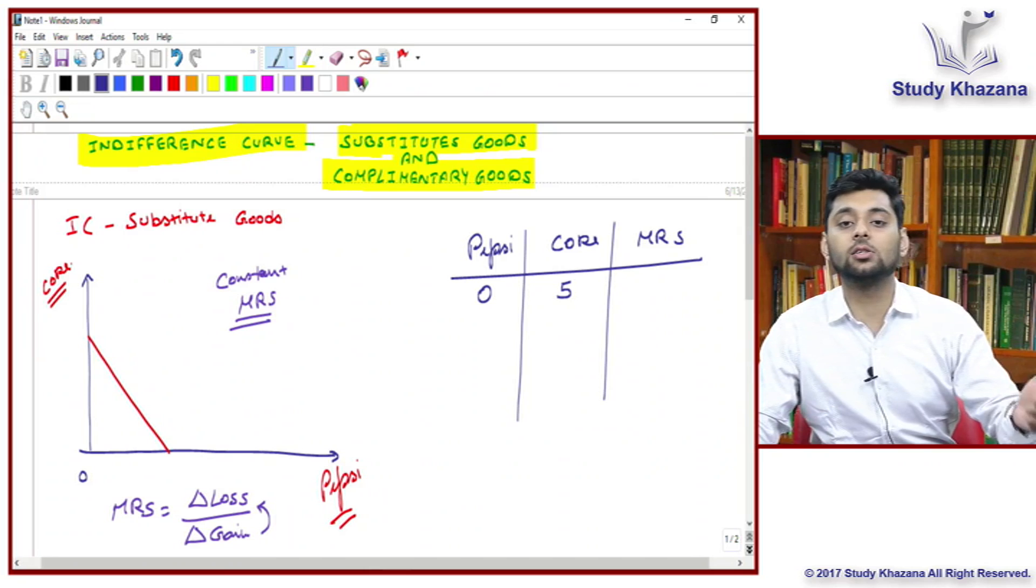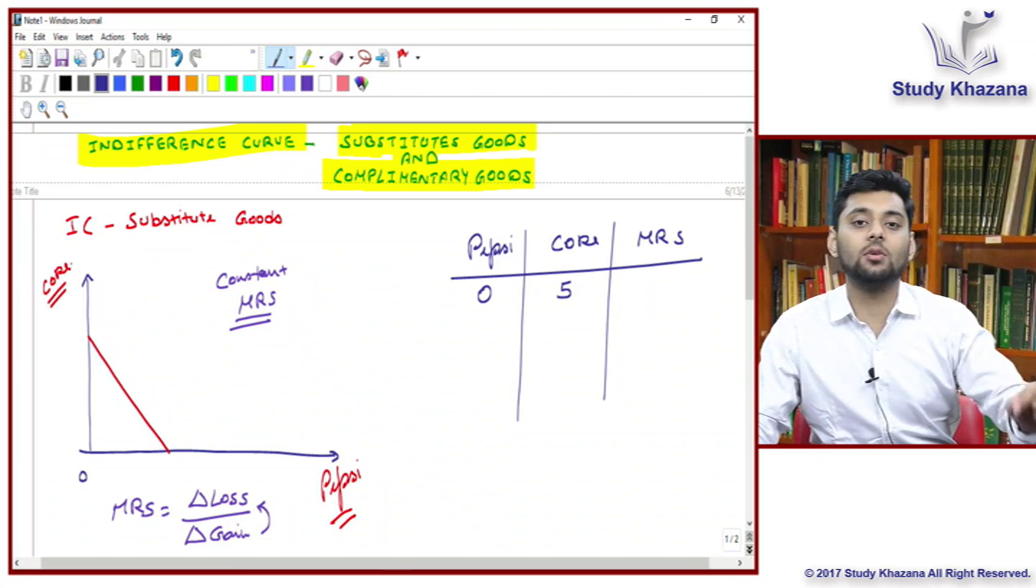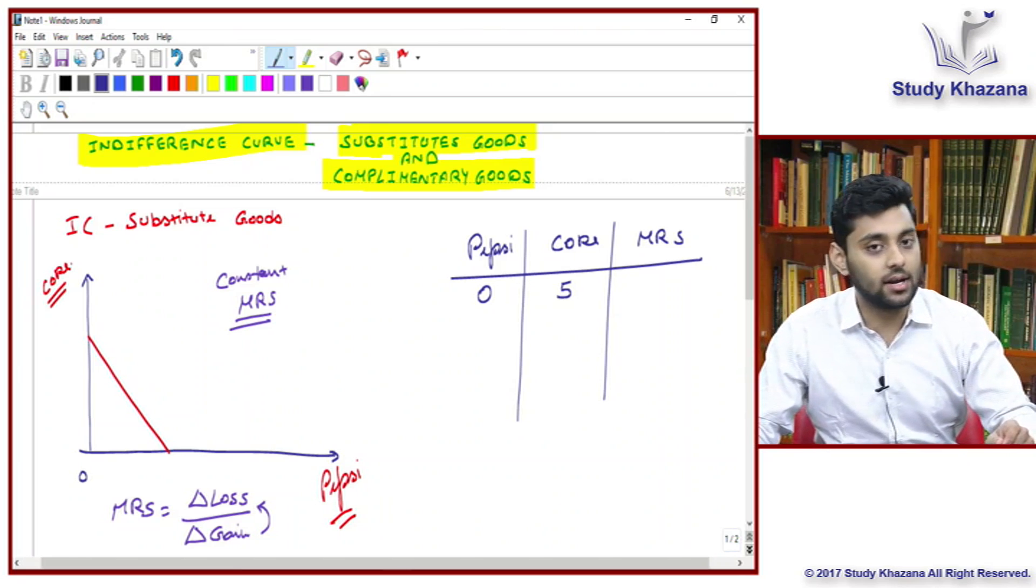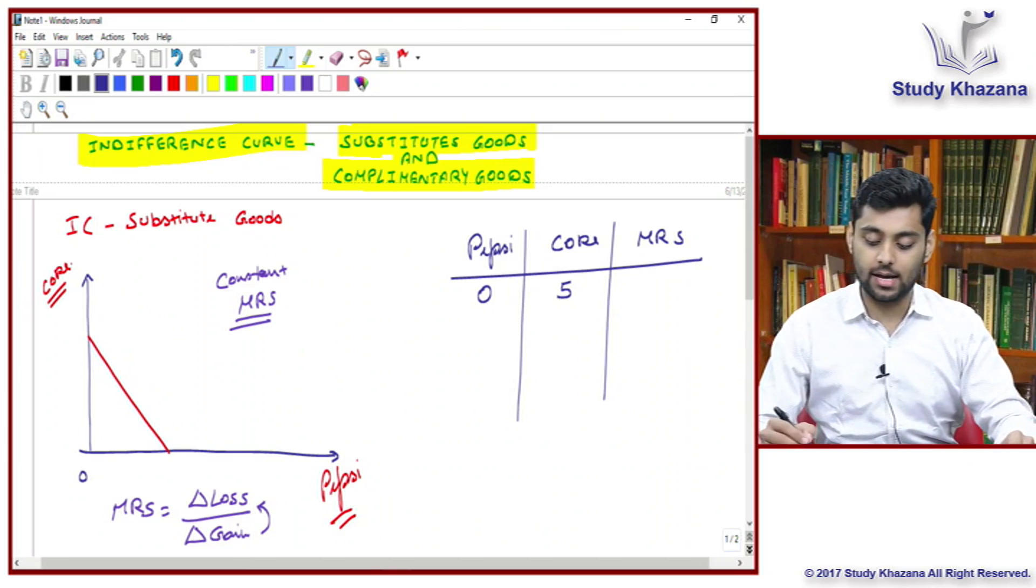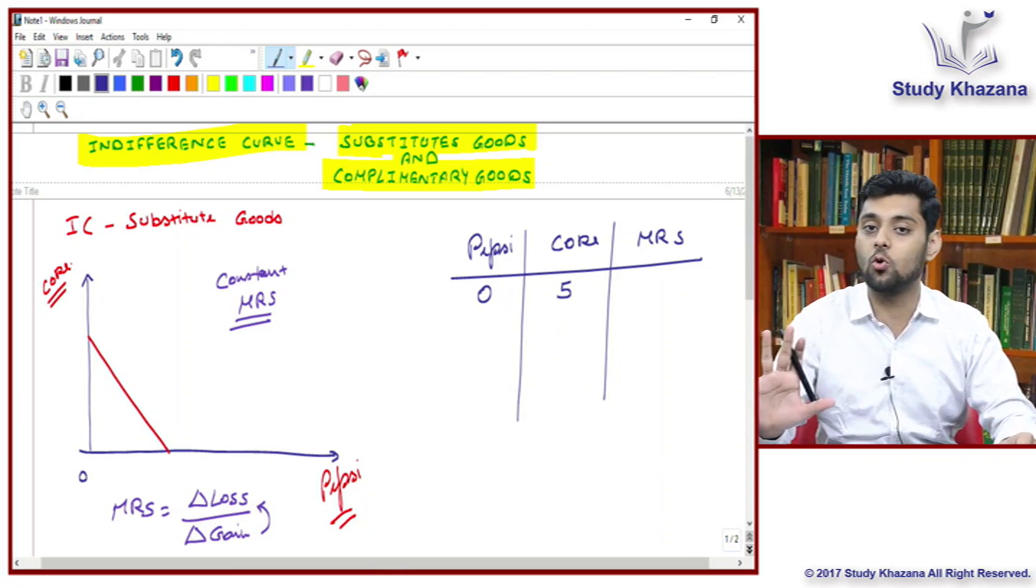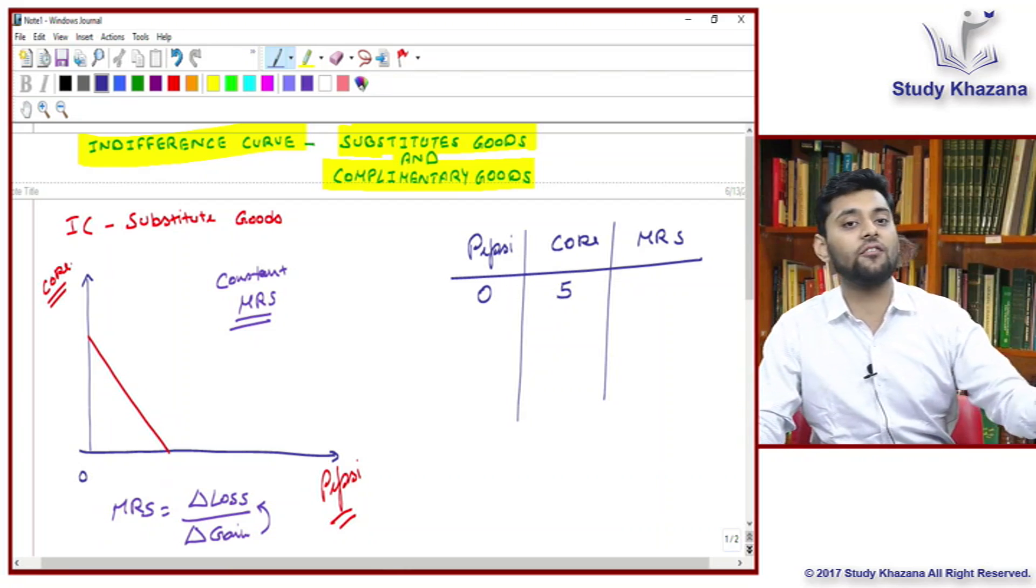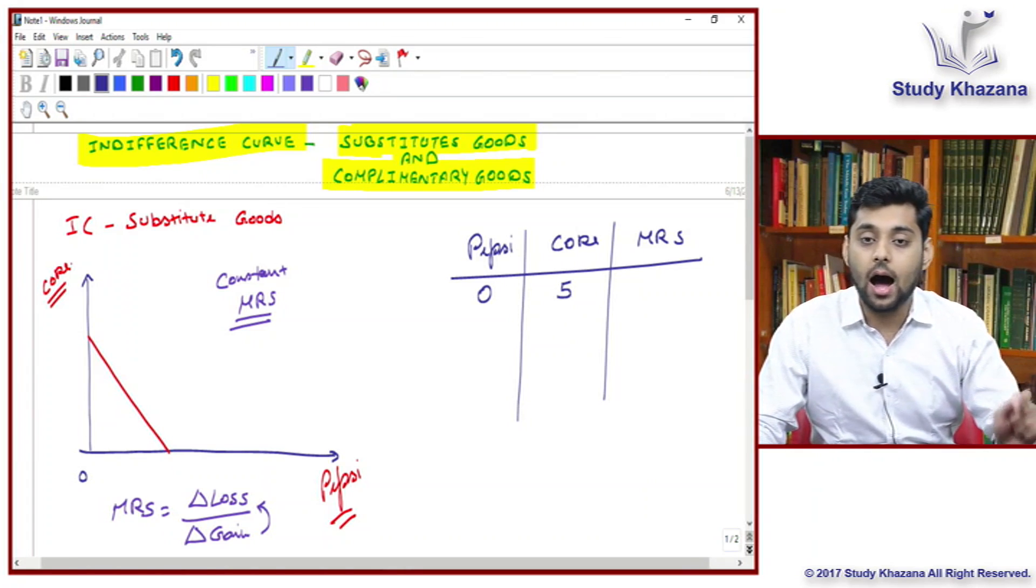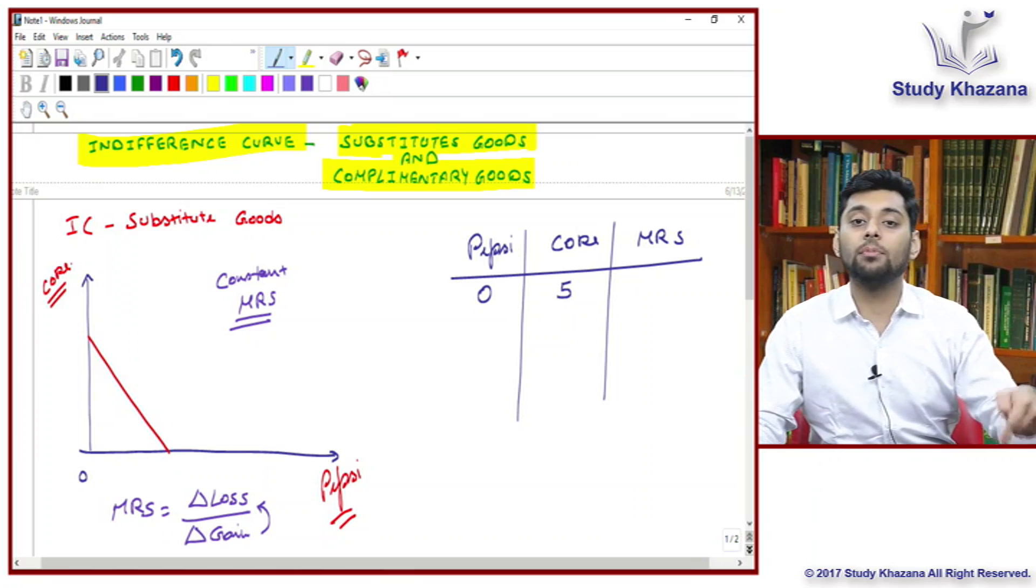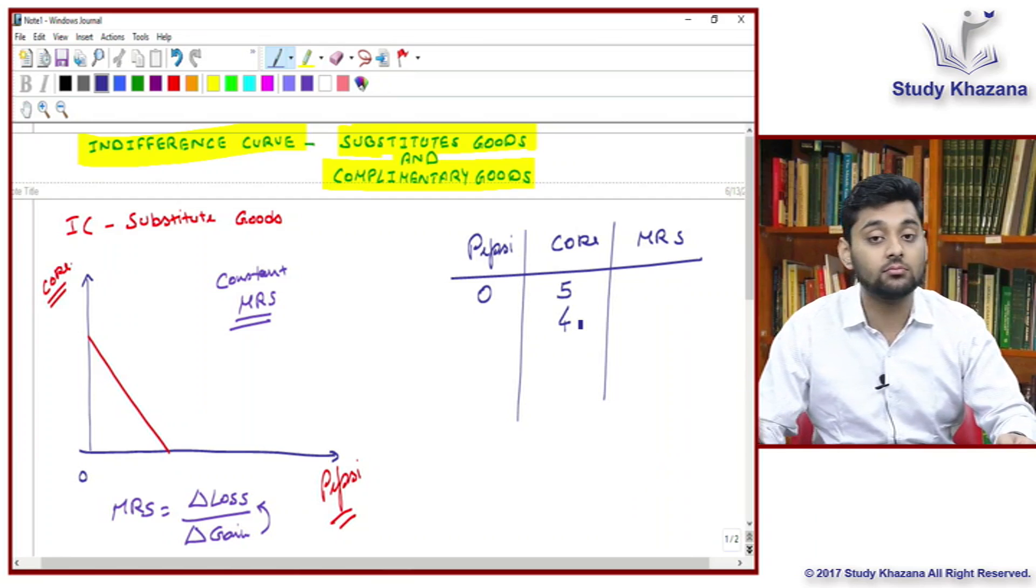You and your friend have Pepsi and Coca Cola. Both have standard unit bottles, let's say two liter bottles. If I start trading between you and your friend, you have five Coke bottles and zero Pepsi bottles at this time. How many Coke bottles will you have left? Four.